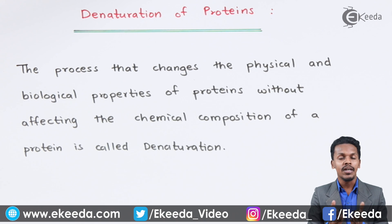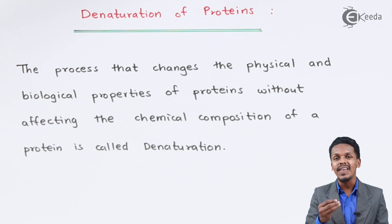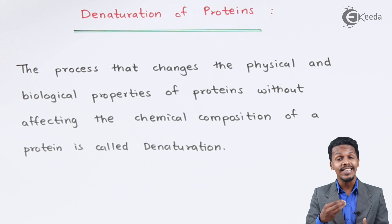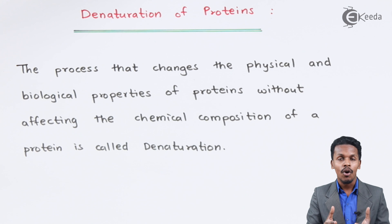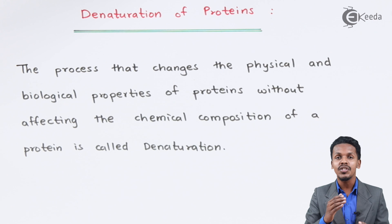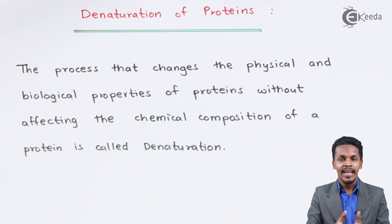For example, a native protein can be easily affected by the change in pH, or by heat. Change in enzymes present, change in pH, or change in temperature — all of these can cause denaturation of the protein.